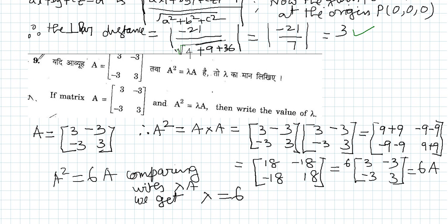Once you do the matrix multiplication you will get the value as plus 18 minus 18 minus 18 plus 18. So A square becomes plus 18 minus 18 minus 18 plus 18. Now let us take the common factor 6 out...